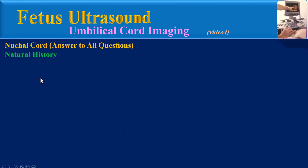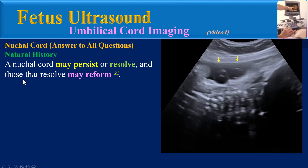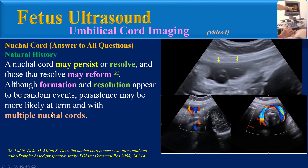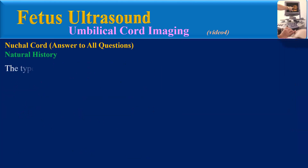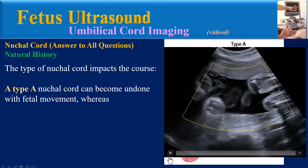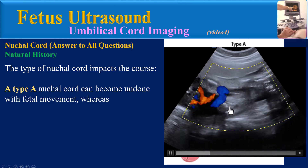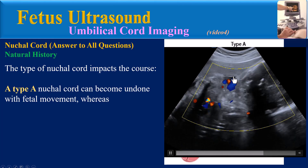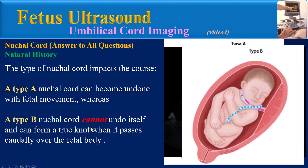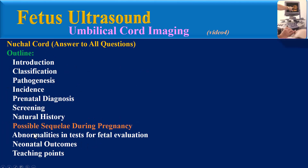Natural History: If a nuchal cord is detected incidentally on prenatal sonography, it may persist or resolve, and those that resolve may reform. Although formation and resolution appear to be random events, persistence may be more likely at term and with multiple nuchal cords. A Type A nuchal cord can become undone with fetal movement — following the placental end, it crosses over the umbilical end encircling the fetal neck. A Type B nuchal cord cannot undo itself and can form a true knot when it passes caudally over the fetal body.